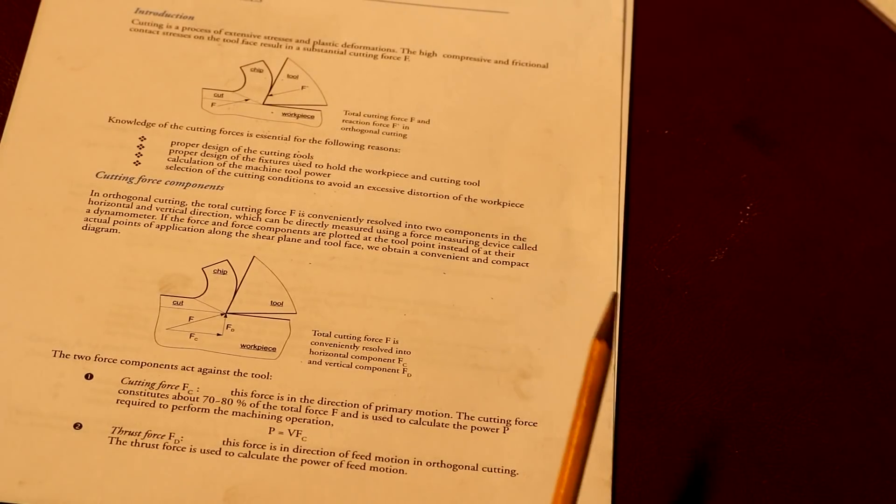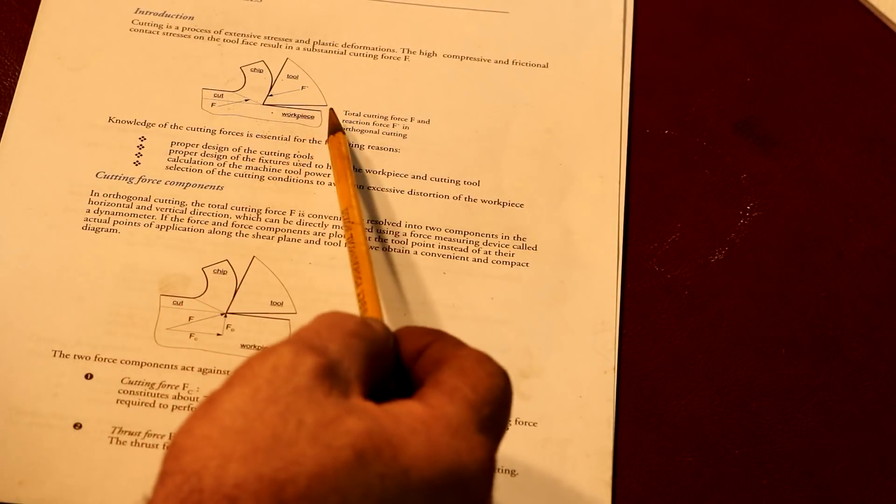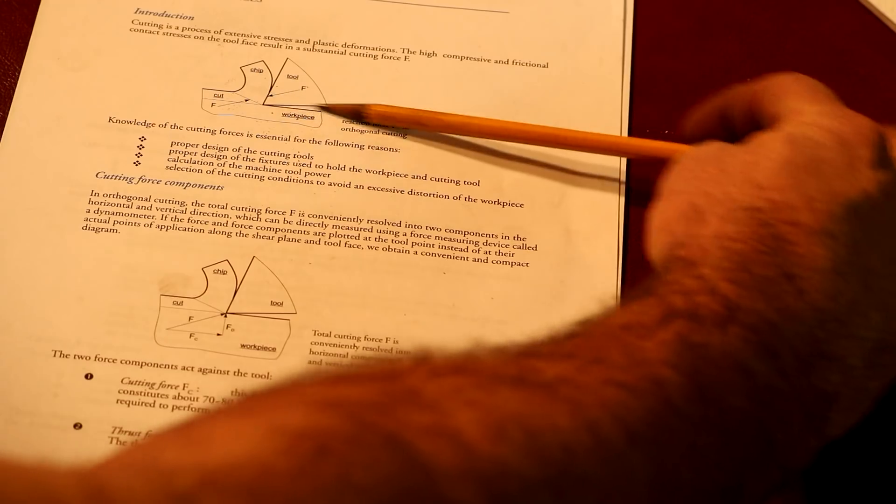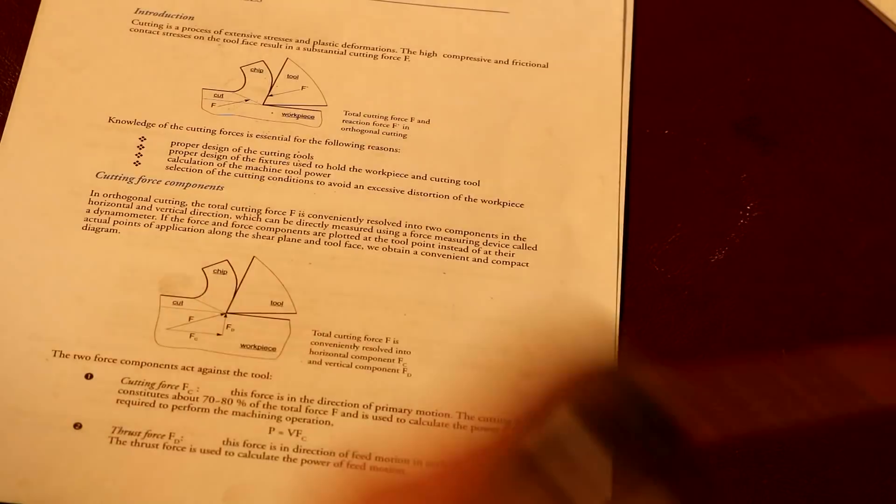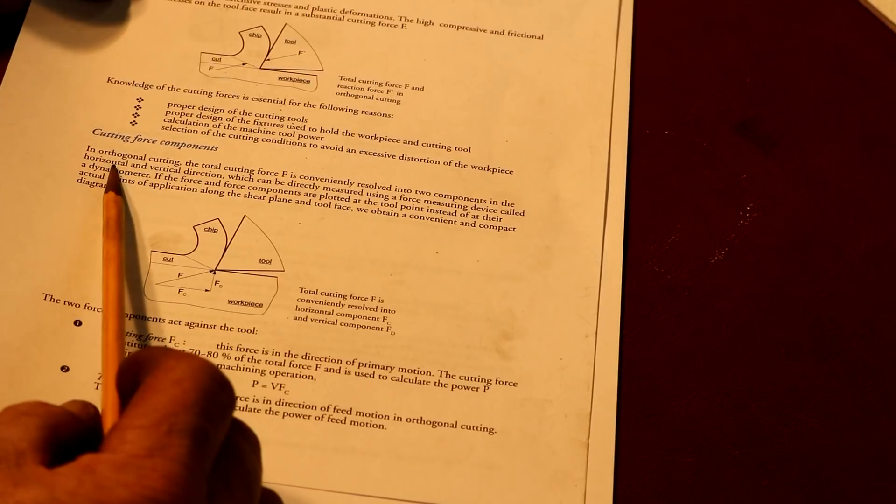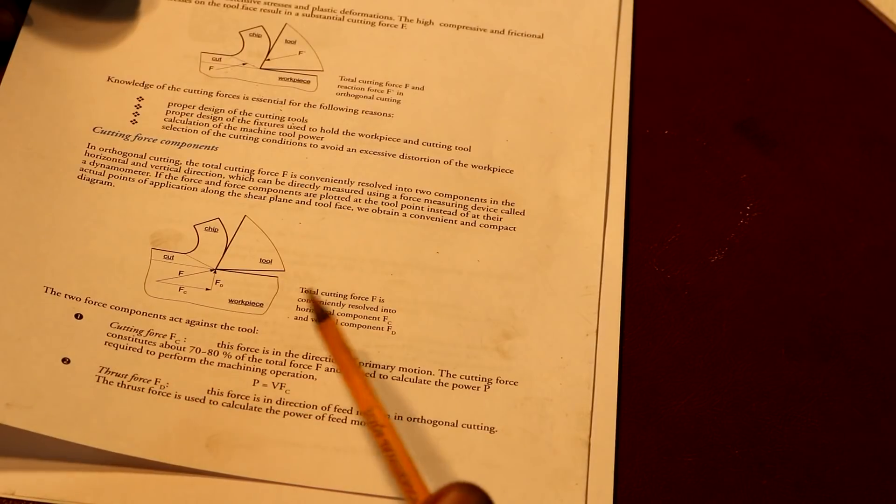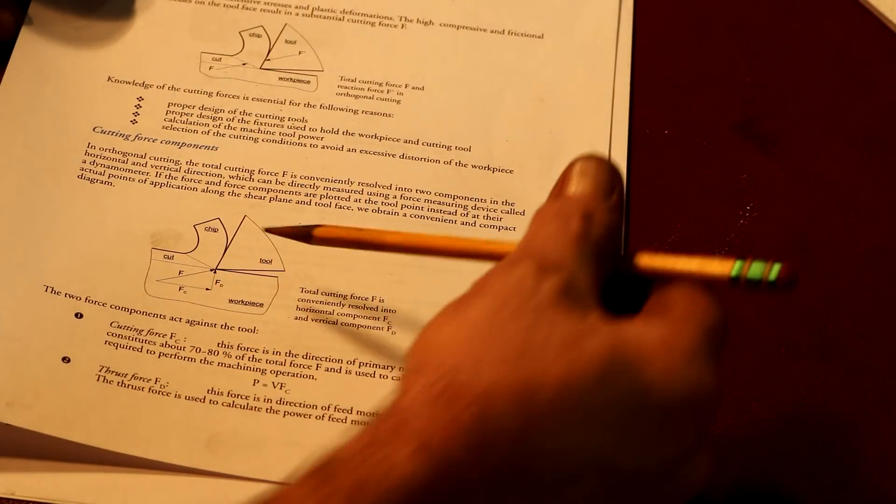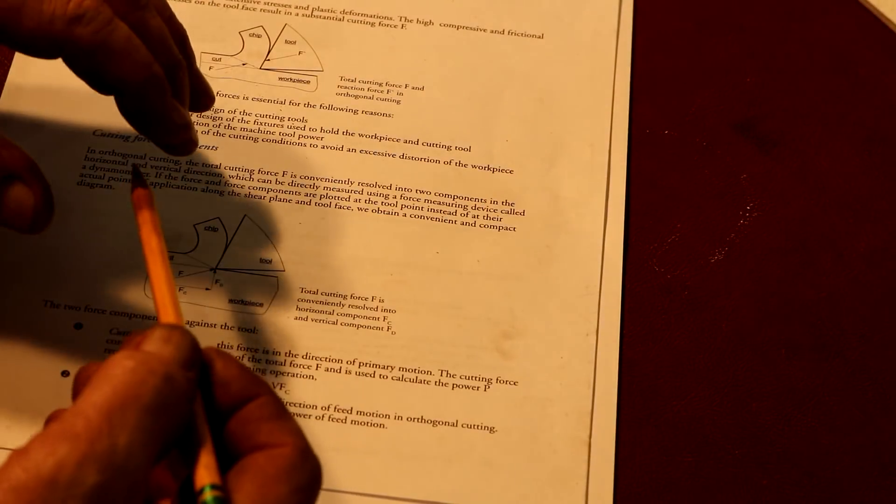So the forces there are pretty simple to figure out. This diagram is talking about that, where the tool is cutting and the chip is peeling up and the force is acting on the tool. When you get into orthogonal cutting, and that just means that the cutting action is at 90 degrees to the cutting edge, you end up with another force.